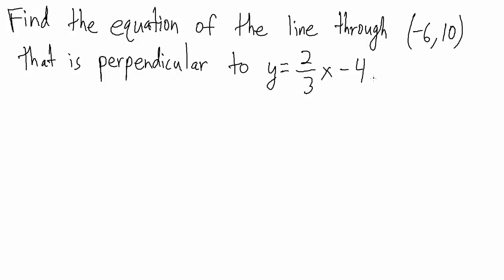This is going to be pretty similar to the case where the lines are parallel, but there's just one extra step. When we want to find the equation of a line we have to have the slope of the line and any point on the line. We're given a point right away — the line goes through negative six comma ten — so let's note that. Negative six comma ten is a point on the line we want. Now we just have to find the slope of the line we want; we'll call it m.